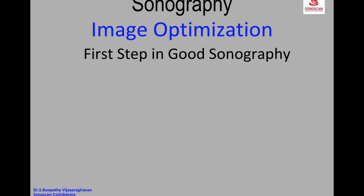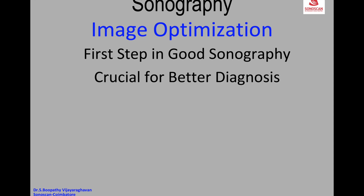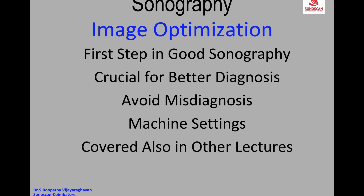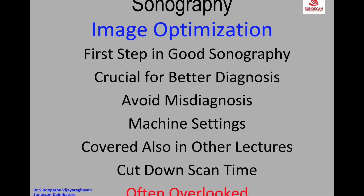This is the first step in group sonography. It is crucial for better diagnosis and to avoid misdiagnosis. This will cover the machine settings, some of which will be covered in other lectures with detailed examples. This is very useful to cut down the scan time, and this is one subject which is often overlooked — as a result the scan time increases and your diagnosis is not up to the mark.